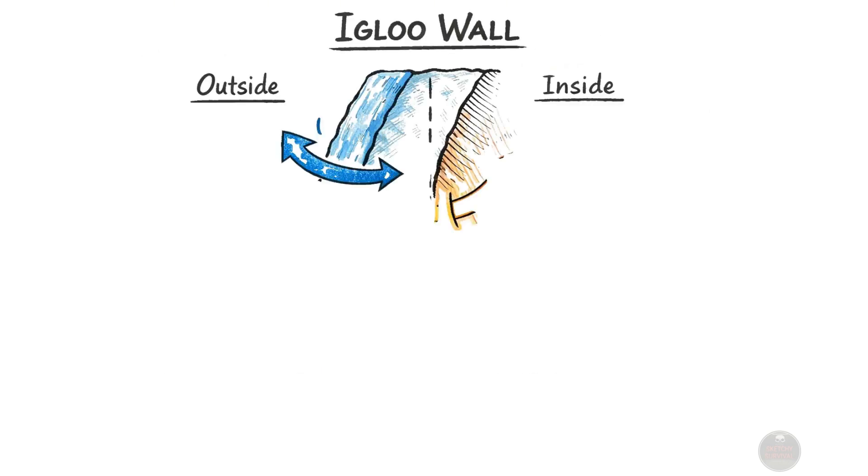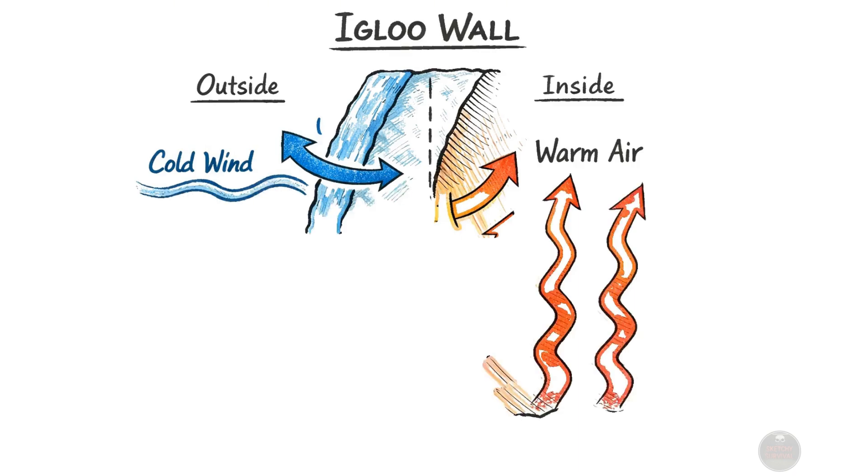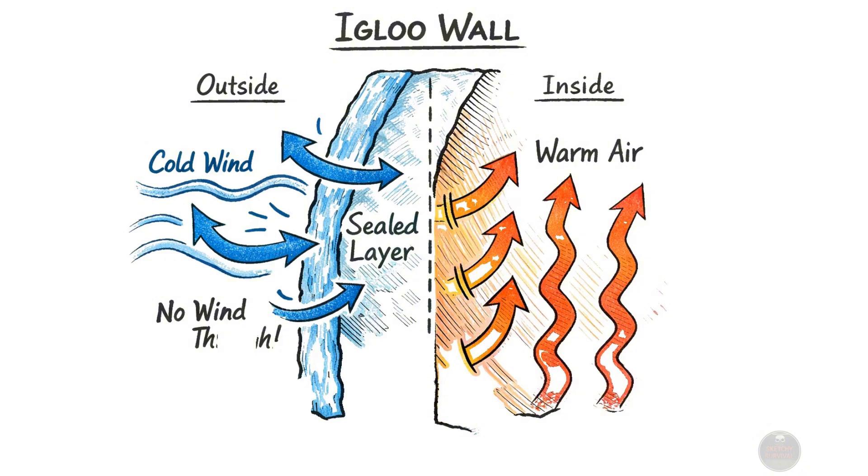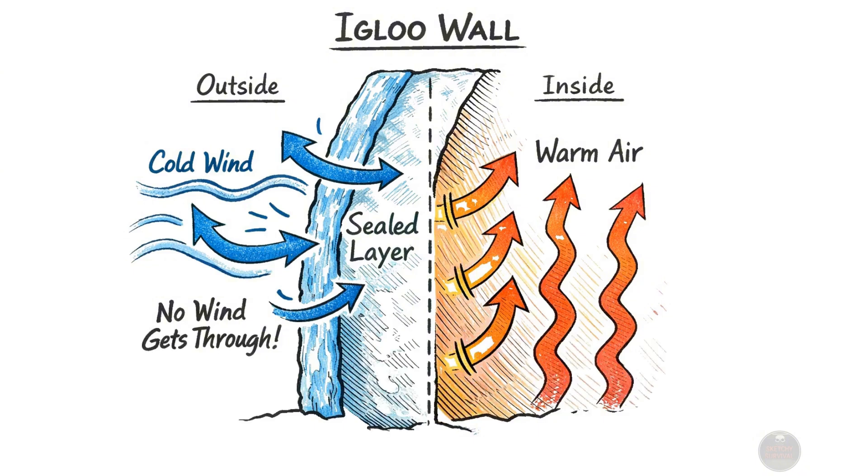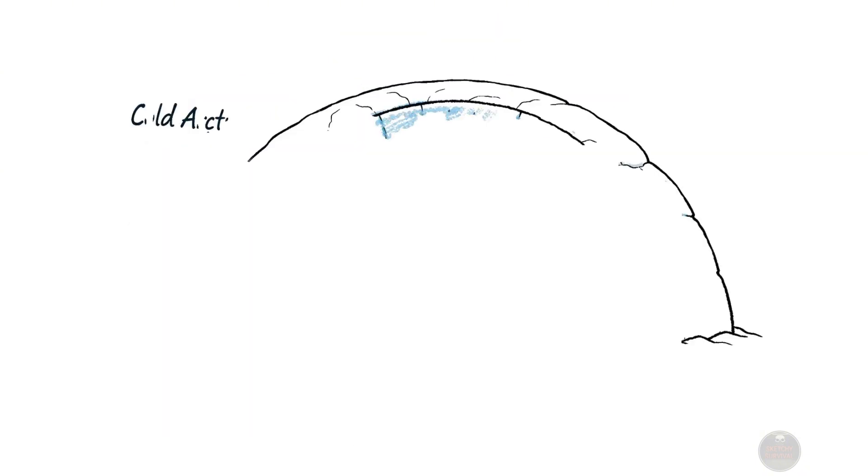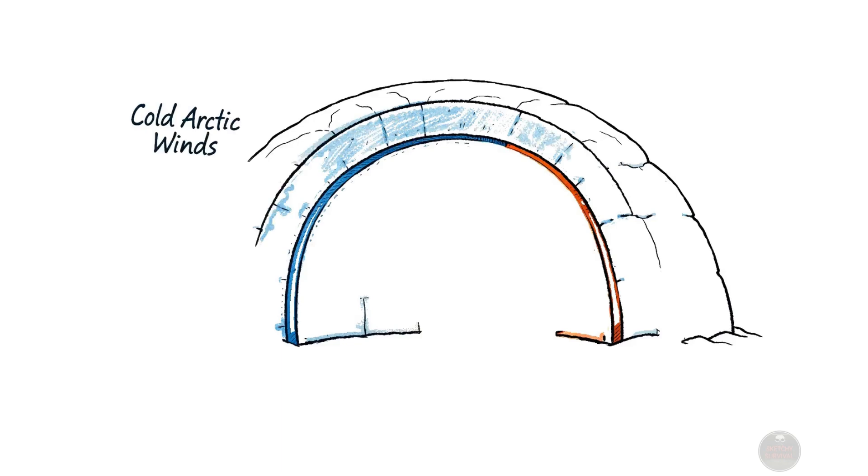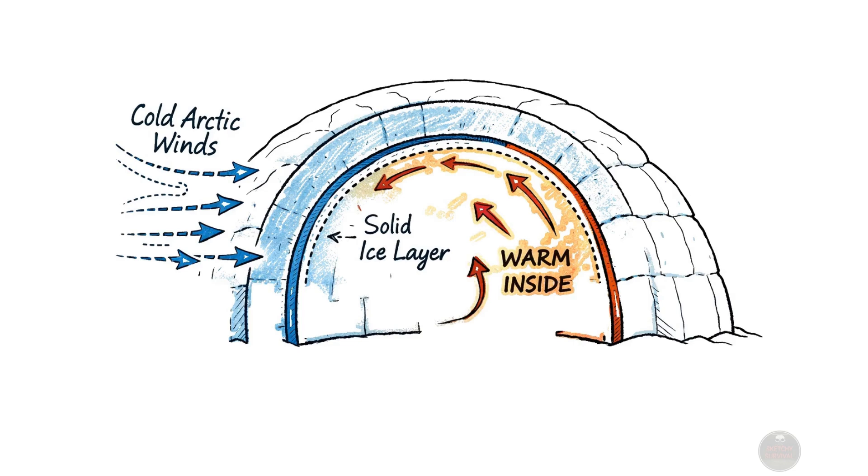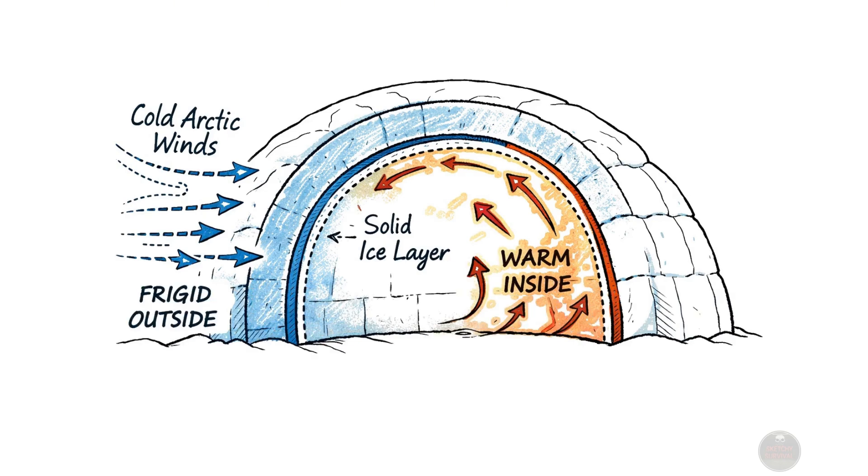This robust, impermeable layer is absolutely vital because it completely stops any penetrating wind from entering the shelter, which would otherwise rapidly remove precious warmth through convection. This natural sealing process significantly enhances the igloo's insulating properties, making it an exceptionally effective barrier against the harsh arctic winds and freezing cold outside.